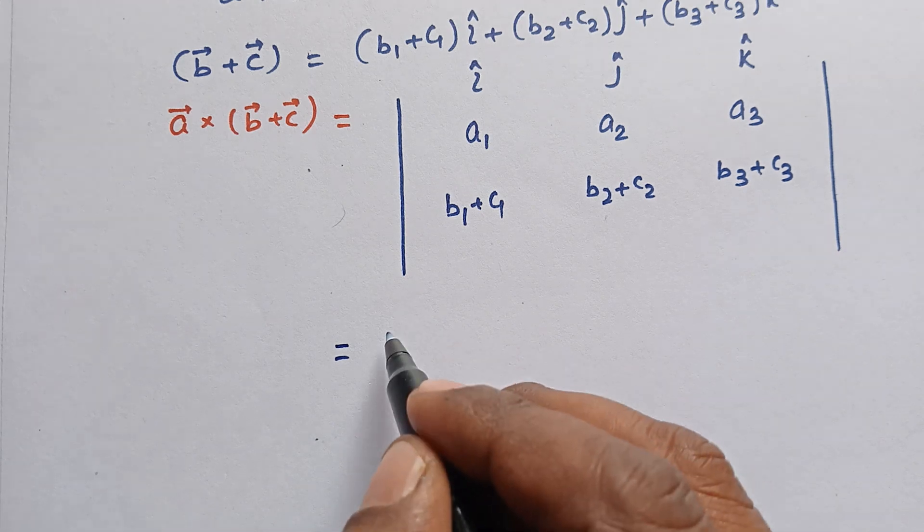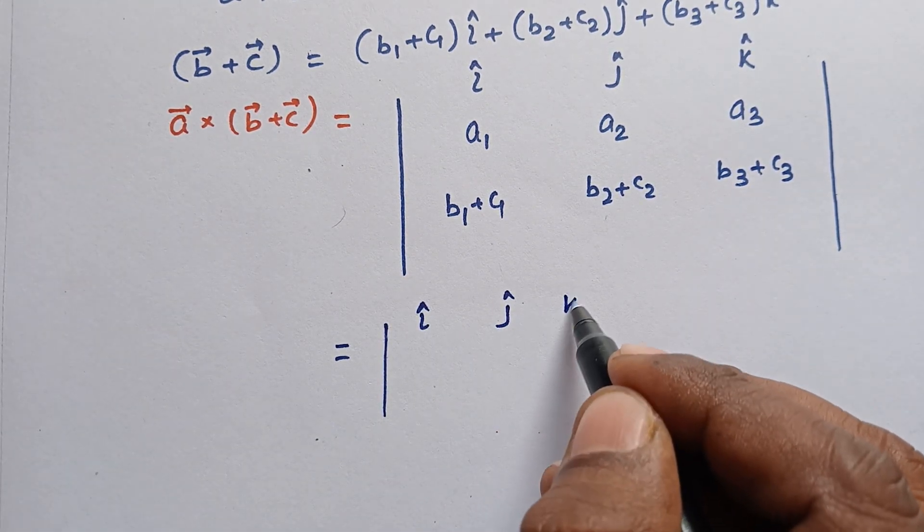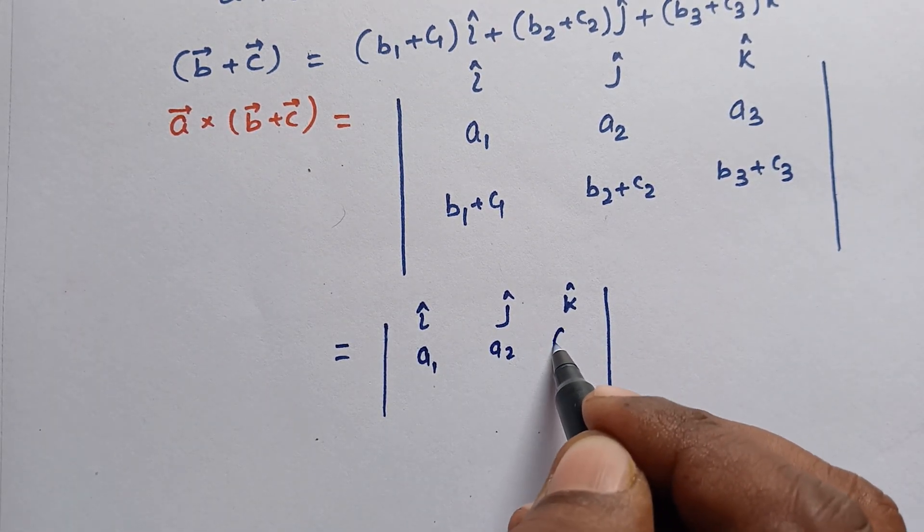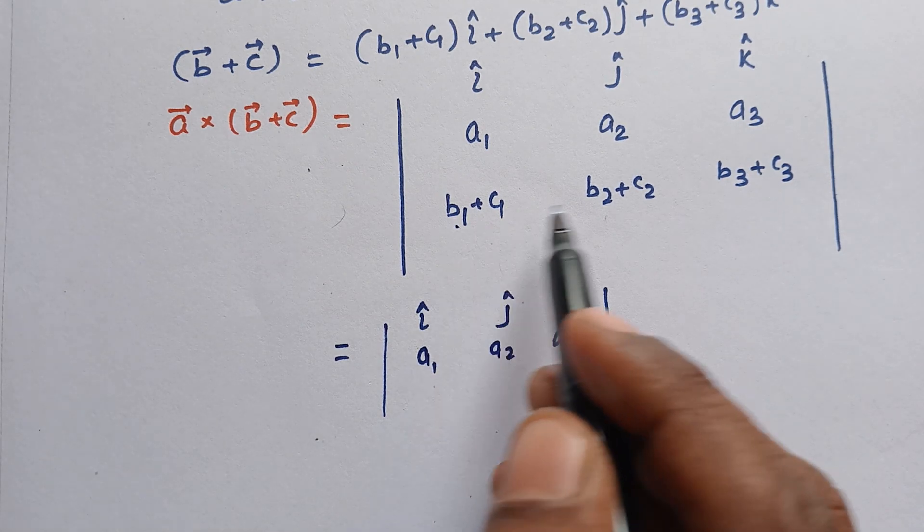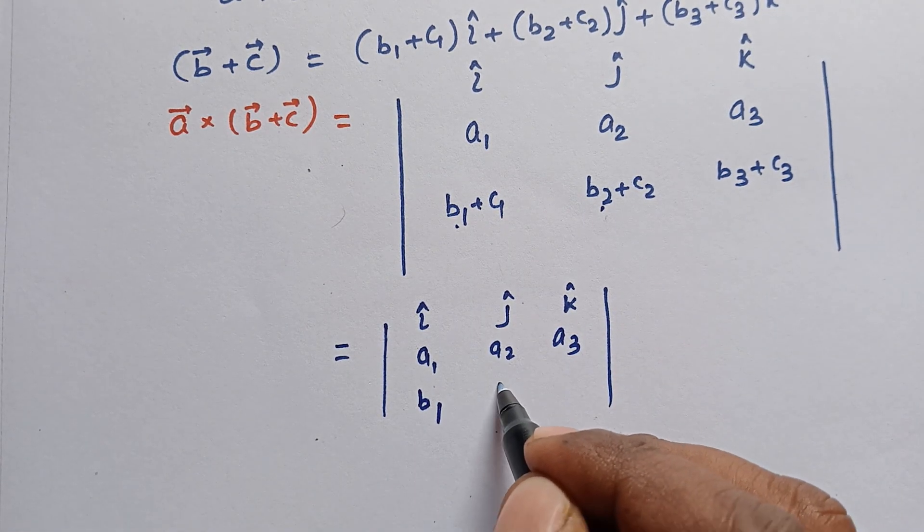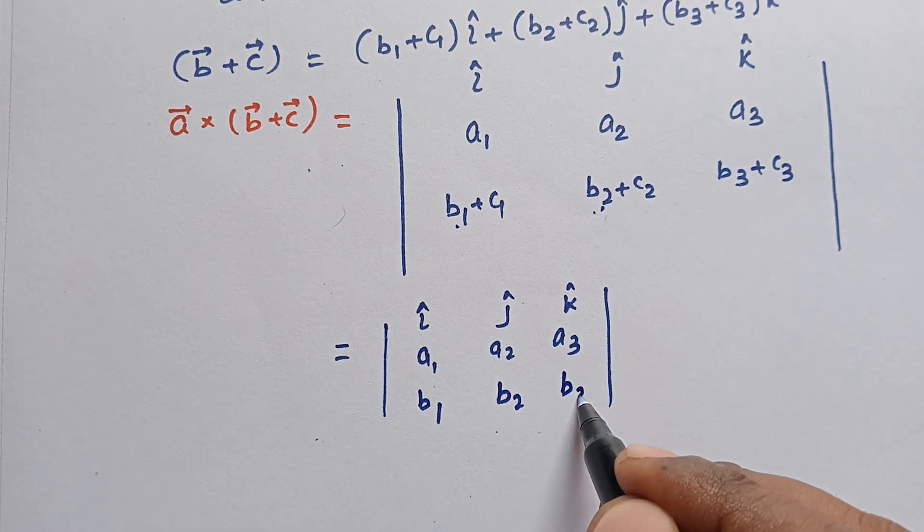So we can split it into two determinants: î, ĵ, k̂; a1, a2, a3; and on top of this term we take the first term b1, b2, b3.